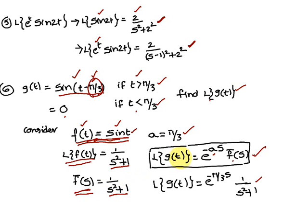The formula for Laplace of g(t) is e^(-as)·f̄(s). Substituting f̄(s) = 1/(s² + 1) and a = π/3 into the formula gives the final answer.